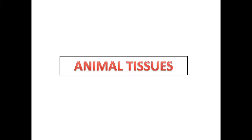Let's start our topic: Animal Tissues. What is tissue? A group of cells connected together to perform a specific function is called tissues. These tissues are divided into plant tissues and animal tissues. This is a brief introduction of animal tissues. I am going to talk about the classification of animal tissues.